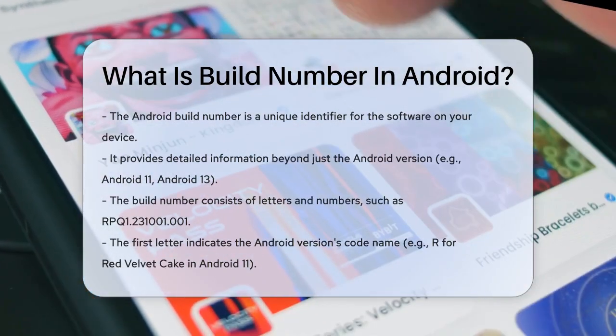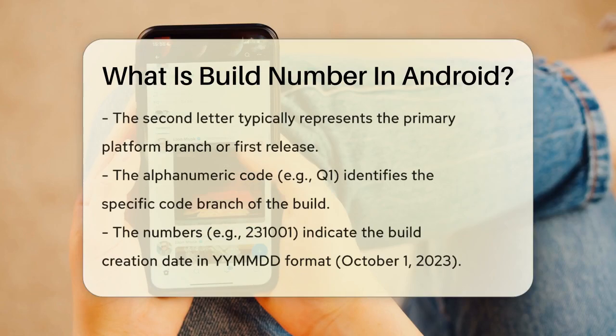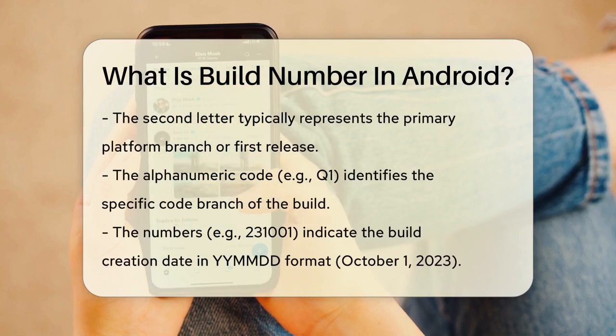Let's decode this. The first letter, R, stands for the Android version's codename — in this case, Red Velvet Cake for Android 11.